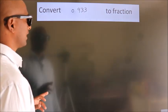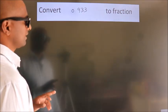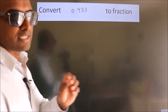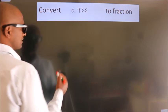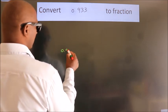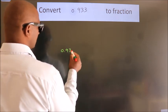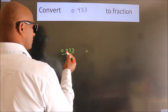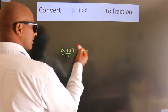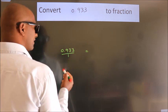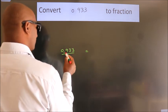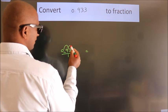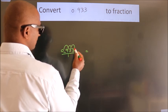Convert 0.933 to a fraction. Given is 0.933. To convert this to a fraction, we have to move this decimal after 1, 2, 3 numbers.